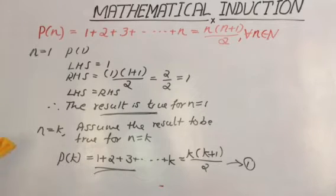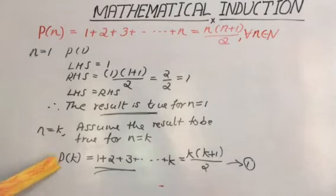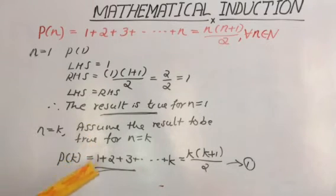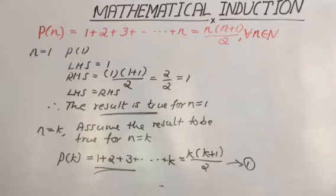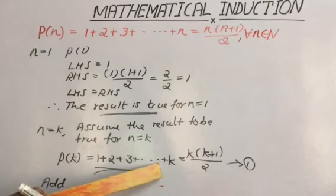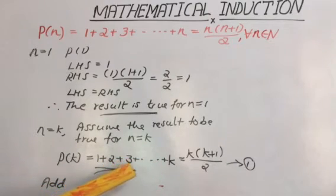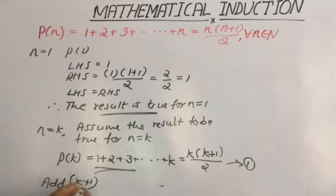As a third step, we have to prove the result to be true for n equal to k plus 1. For that, let us use equation 1. In equation 1 we have k terms, that is P of k. To prove for n equal to k plus 1, we need one more term in the expression. The series goes 1, 2, 3 — the kth term is k, so the next term will be k plus 1. Therefore, we add k plus 1 to both sides of equation 1.